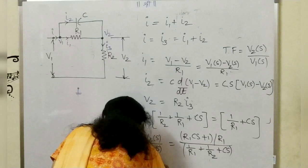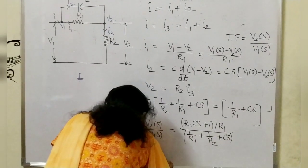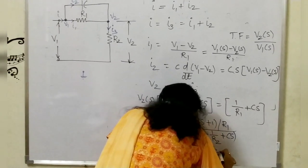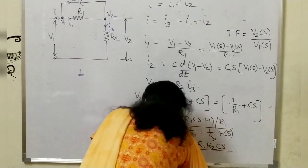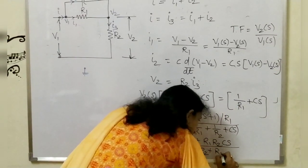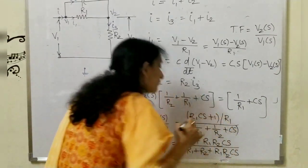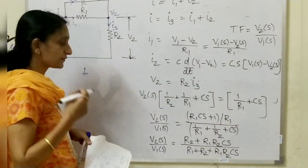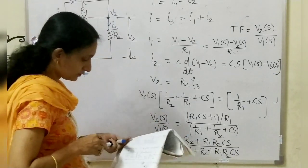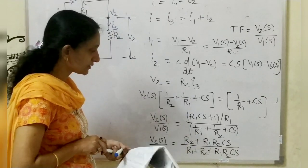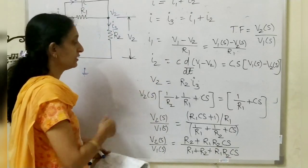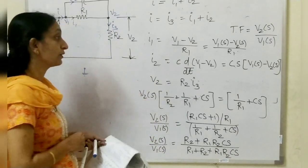Finally, you can rearrange in standard form. It is desirable to rearrange the transfer function to get the highest power of S in the denominator. This is the standard form of the transfer function V2(S)/V1(S).